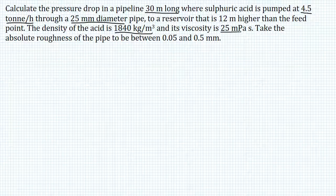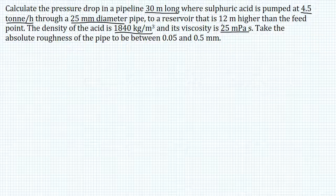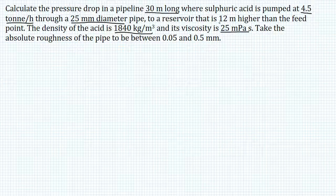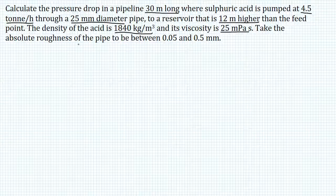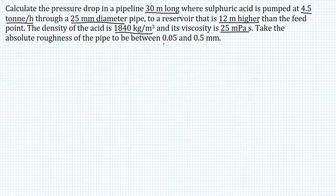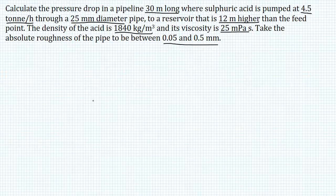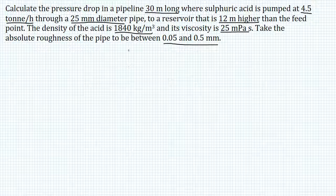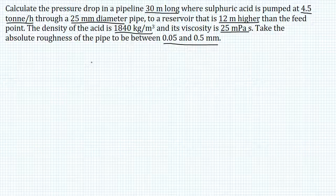We also know that the reservoir at the end of the pipeline is 12 meters higher than the feed point. I've added values for absolute roughness for mild steel pipes that we're going to need to solve the problem. At this point, you should pause the video and attempt to solve the problem on your own before looking at the solution.